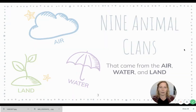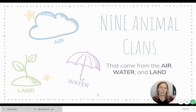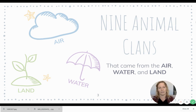You might remember that there were nine animal clans and they were chosen from the air, the land, and the water. From previous years, you would remember that Aboriginal communities are really connected with nature, and that's one of the things that came up with their family names as well.